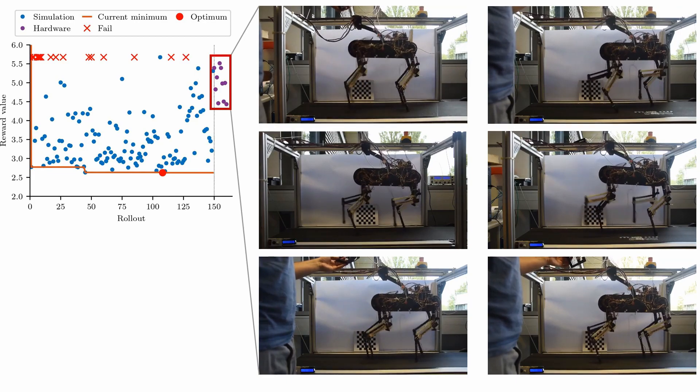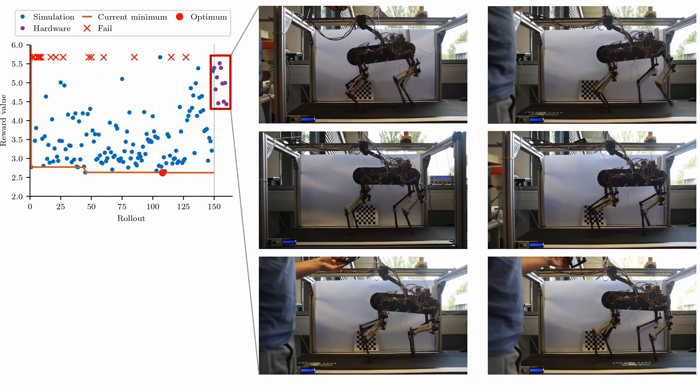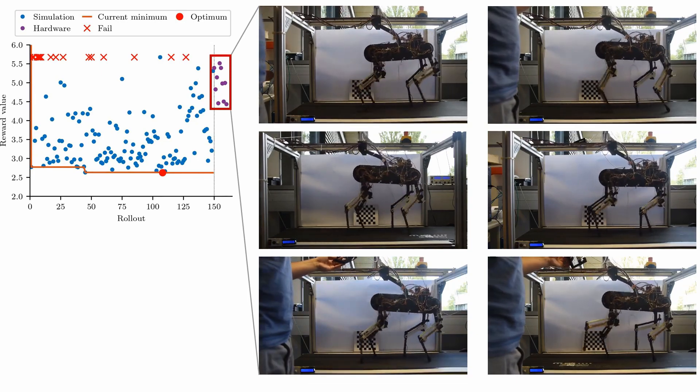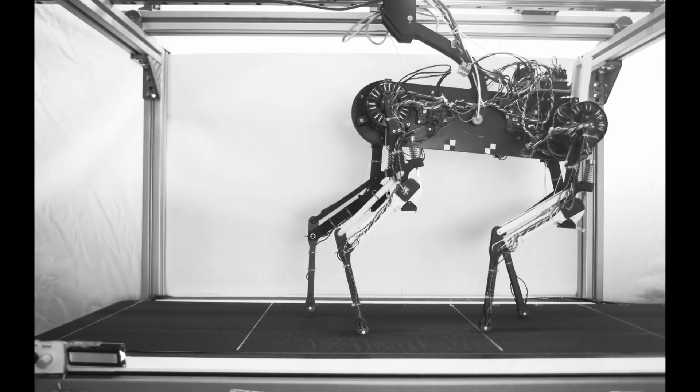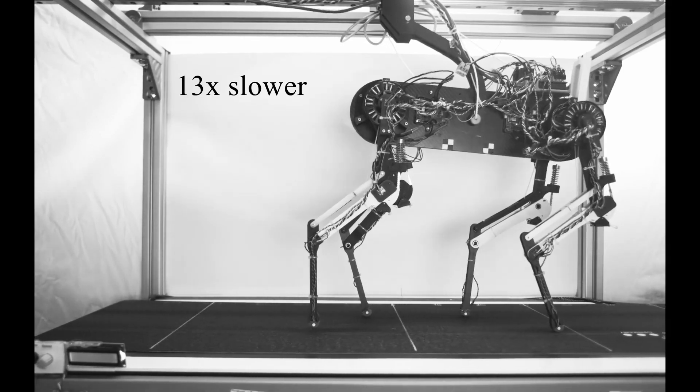If the robot stumbles, the CPG can elastically correct the robot's behavior reversibly, so it does not fall. If the robot stumbles repeatedly, the algorithm learns to plastically adapt the motion patterns permanently until the robot no longer stumbles.